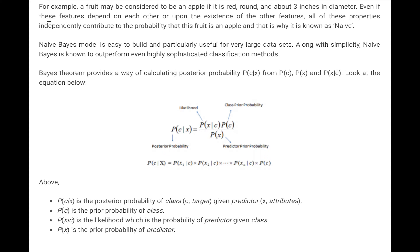Naive Bayes model is easy to build and it's useful for large datasets. Along with its simplicity, it outperforms even highly sophisticated classification methods. Bayes theorem provides a way of calculating the posterior probability P(C|X) from P(C), P(X), and P(X|C). So P(C|X) equals P(X|C), which is the likelihood, times the prior probability P(C), divided by P(X), the predictor prior probability.